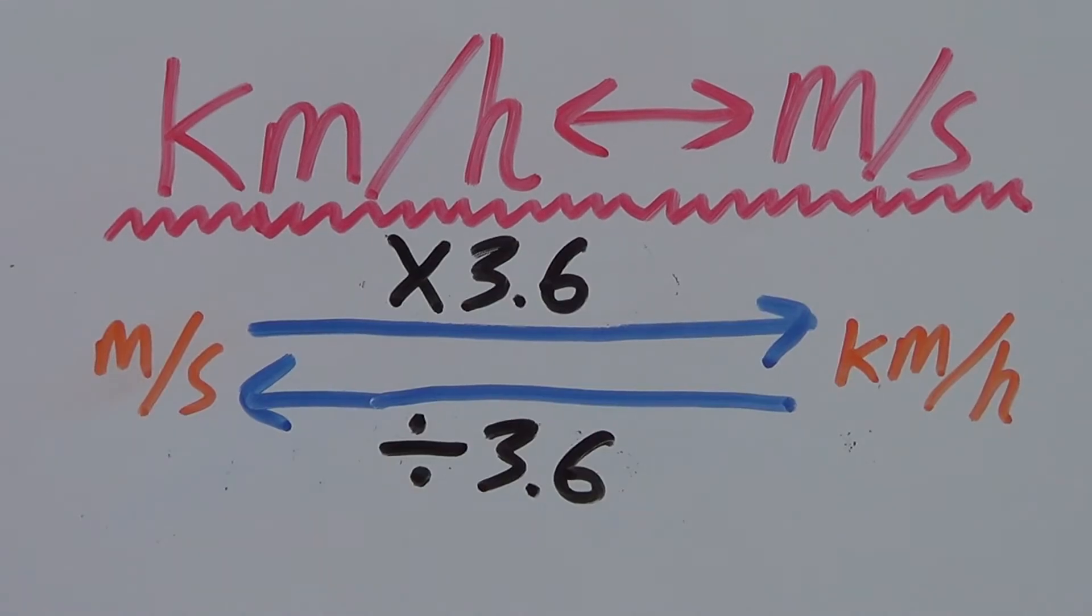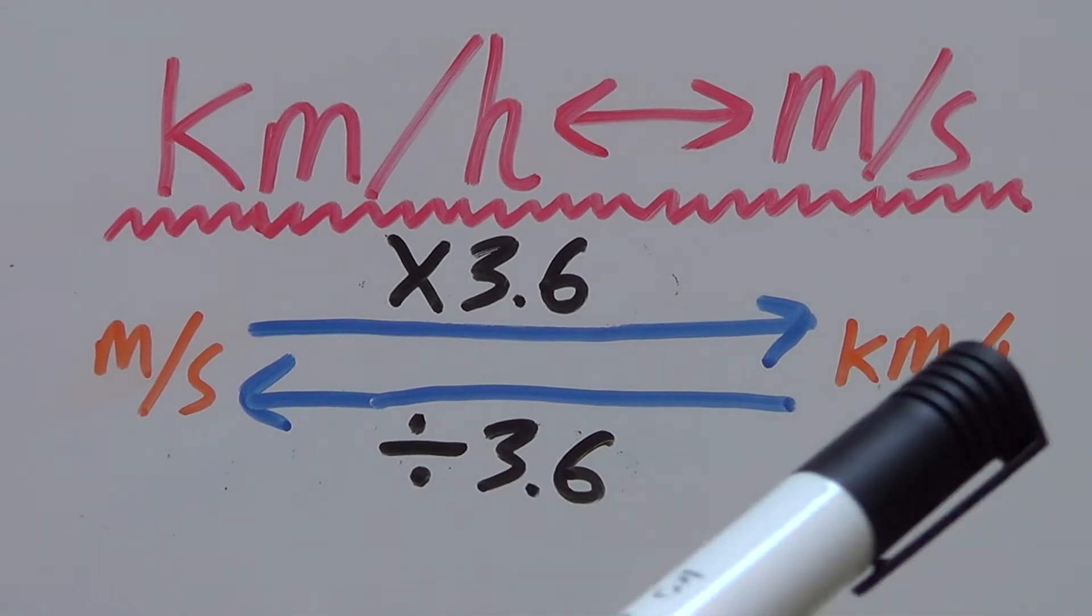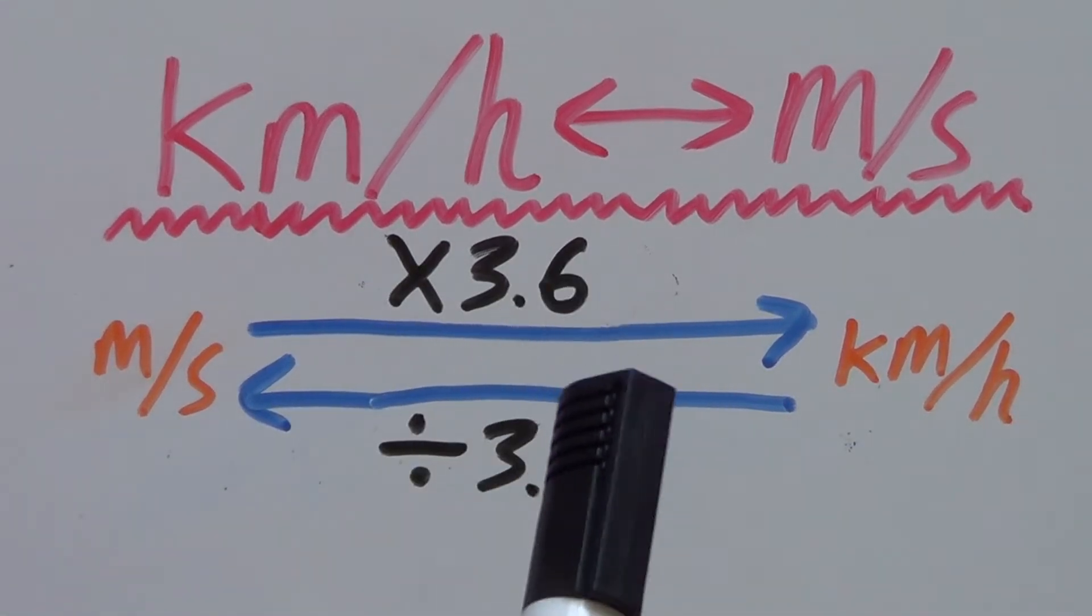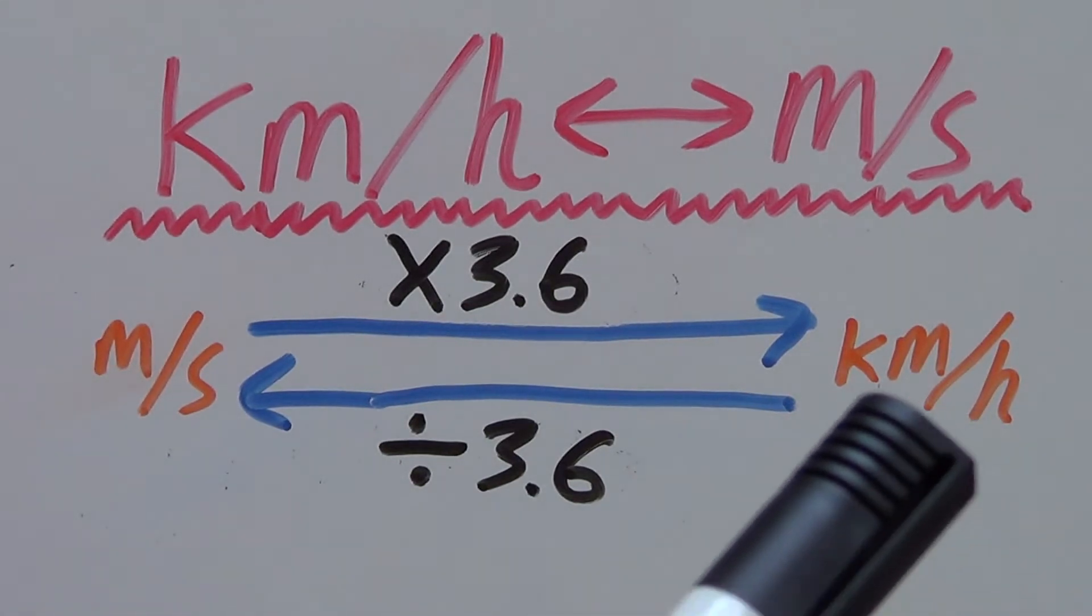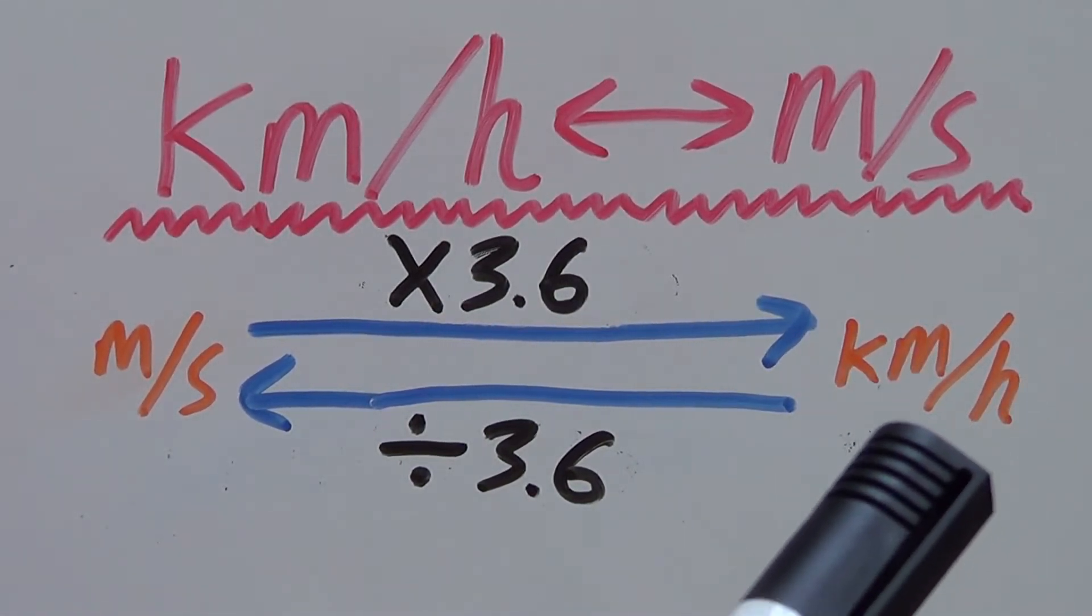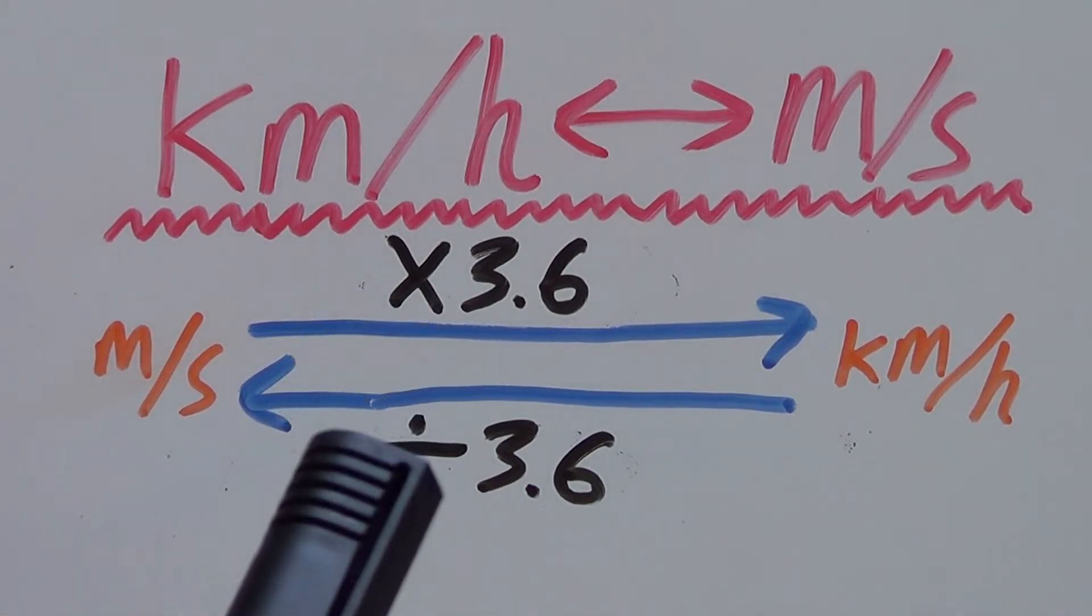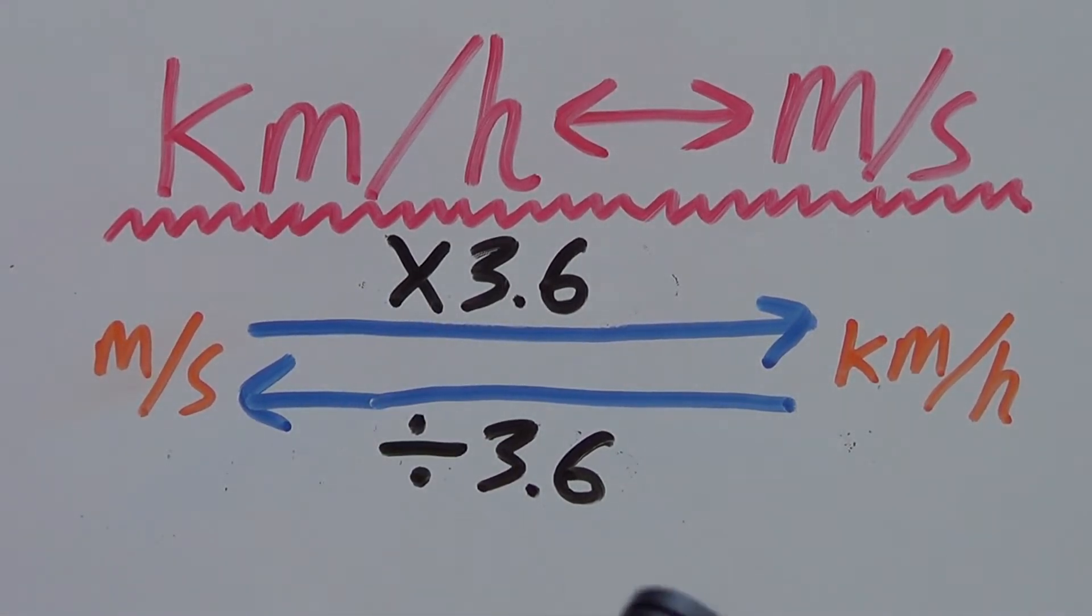So as this diagram illustrates, when we convert meters per second to kilometers per hour, we multiply by 3.6. And when we do the opposite, going from kilometers per hour back to meters per second, we do the opposite operation. So we divide by 3.6.